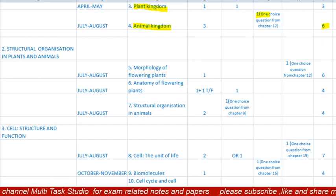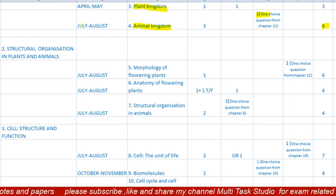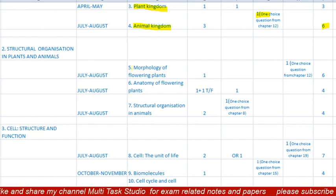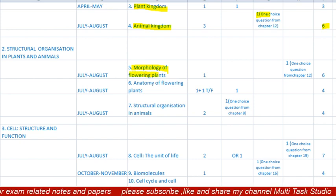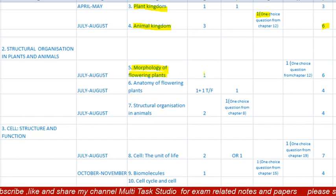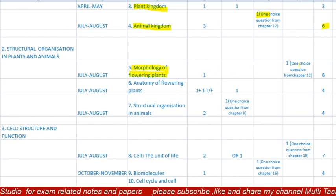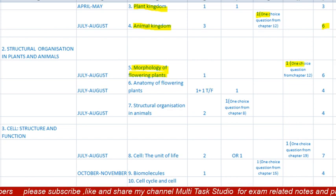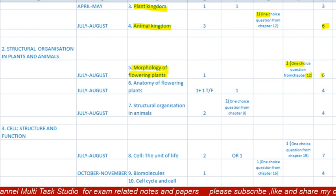Unit 2/3 is 'Structural Organization in Plants and Animals.' The fifth chapter is 'Morphology of Flowering Plants,' to be completed in July/August. There is one MCQ of one mark and one five-marks question. The choice for this five-marks question will be from chapter 12. Total paper will be six marks.